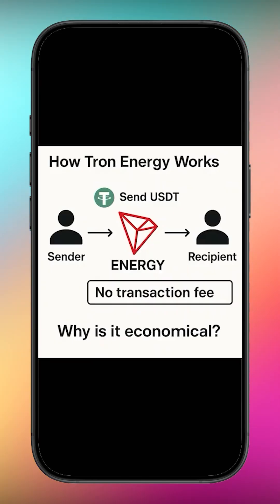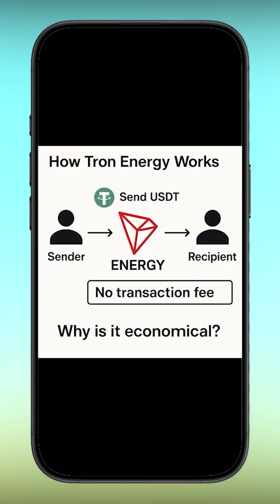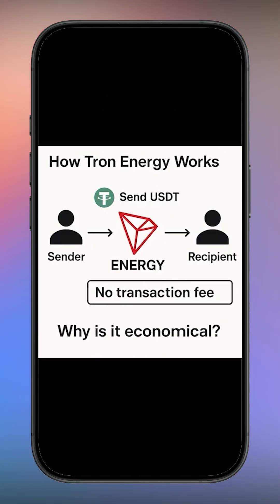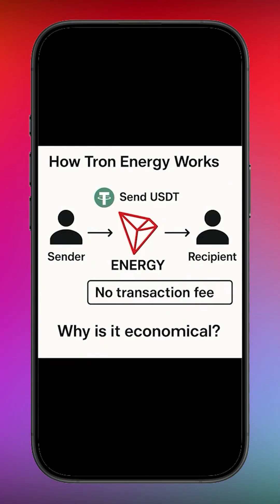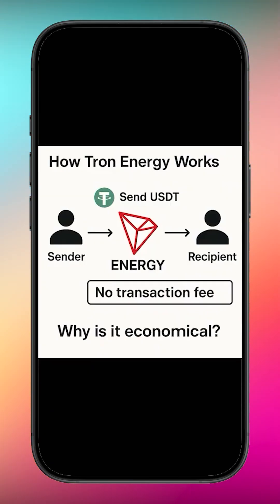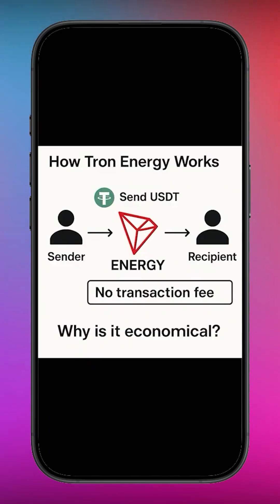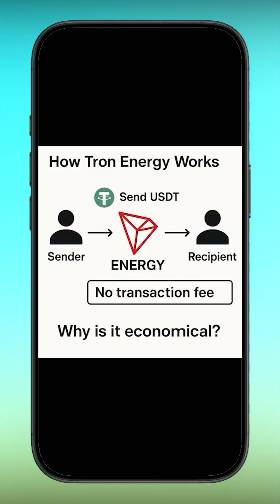Here is the process you are seeing on the screen: Sender → Energy → Recipient. Energy acts like prepaid fuel, so when you send USDT, the cost is taken from your energy balance, not from your TRX. Because energy is cheaper than burning TRX directly, you keep your TRX untouched — no freezing for three days, no locking your funds, no constant spending. You simply pay a small fixed amount, get enough energy for 2, 10, or even 40 transactions, and your transfers become almost free.